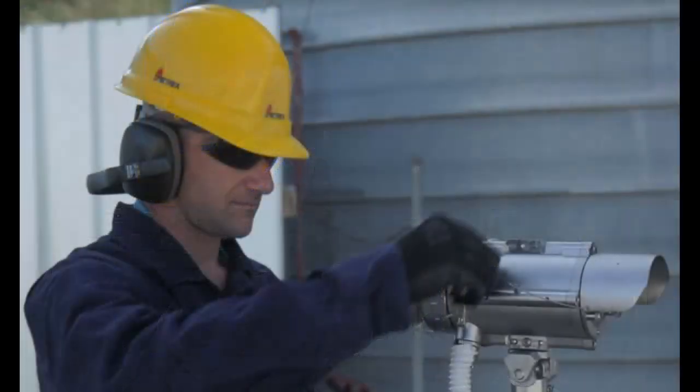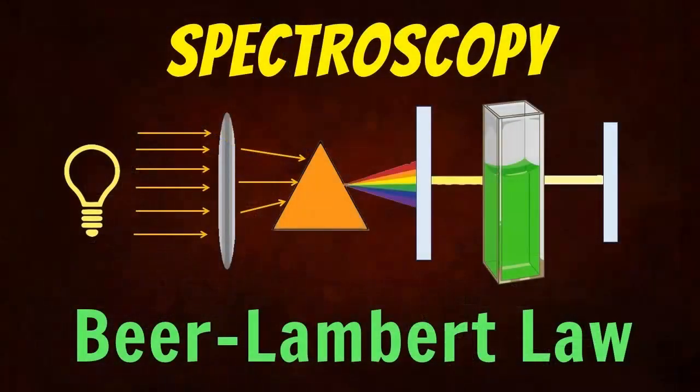Line-of-sight gas detectors are vital tools in industrial, environmental, and safety applications. They operate on the principle of absorption spectroscopy, utilizing the Beer-Lambert law to determine gas concentrations based on the absorption of specific wavelengths of light.